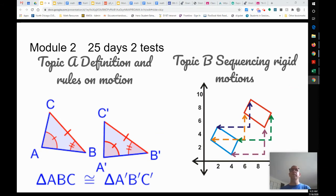We're going to move on from that in module two, 25 days, two tests, and we're going to define the rules of motion. We're taking shapes on a coordinate plane on the graph paper and how to move them around. In topic B, we're going to say, how do I move this shape exactly on top of that shape?